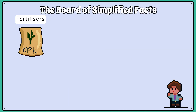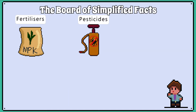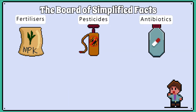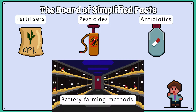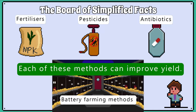Farmers use fertilisers, pesticides, methods for controlling disease and battery methods, all because they have the advantage of improving yield regarding crops and meat production. All these methods, however, do come with disadvantages.